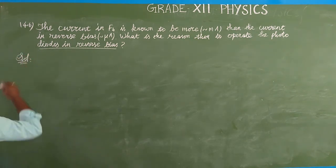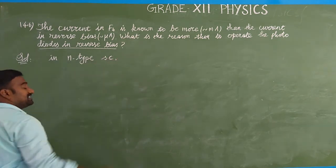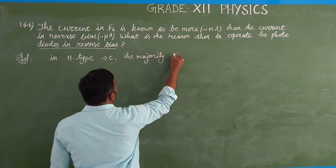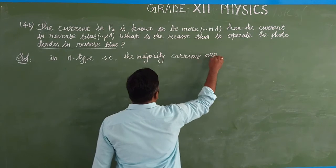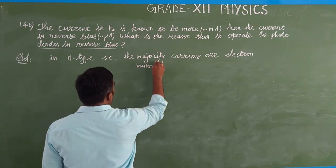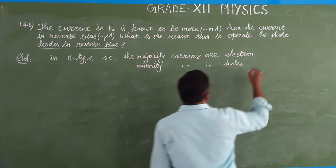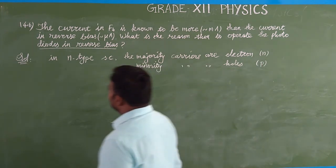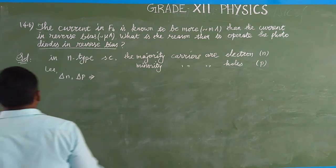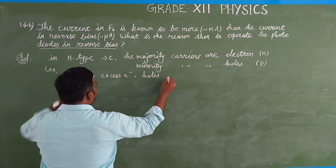Look at the solution. In an N-type semiconductor, what is the majority charge carrier? Electrons. In N-type semiconductor, the majority charge carriers are electrons. But the minority carriers are holes. Let the majority charge carrier be N and the minority charge carrier be P. Let ΔN and ΔP be excess electrons and holes when there is no illumination — meaning no light falling on the diode.